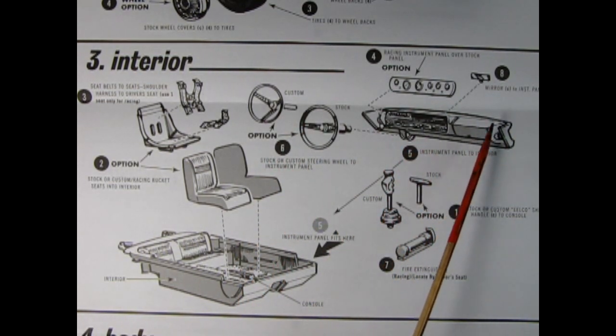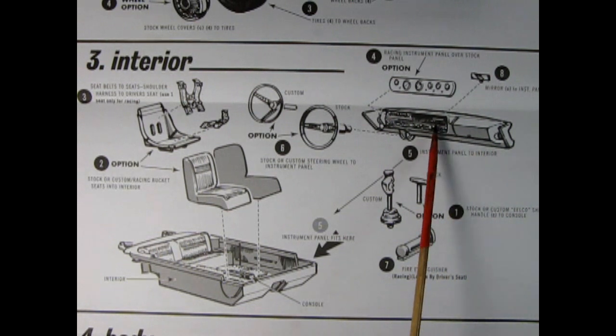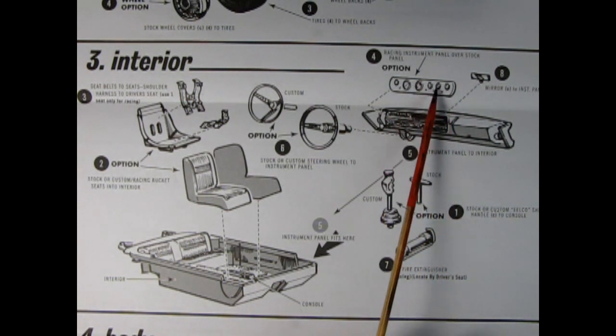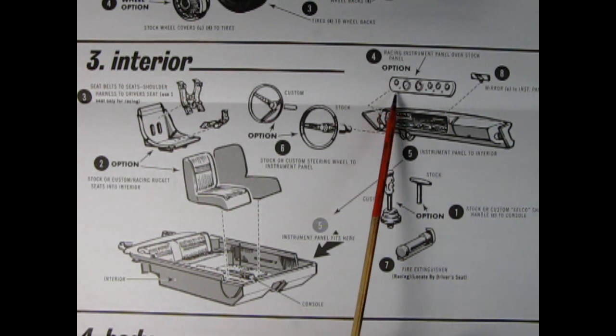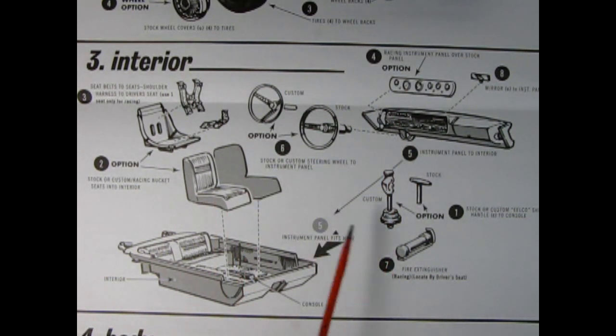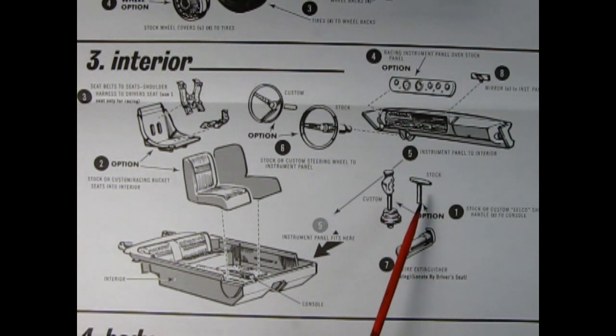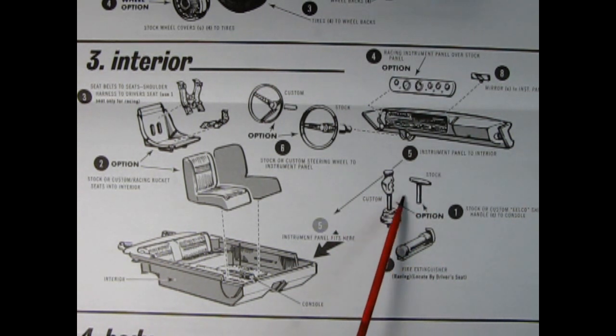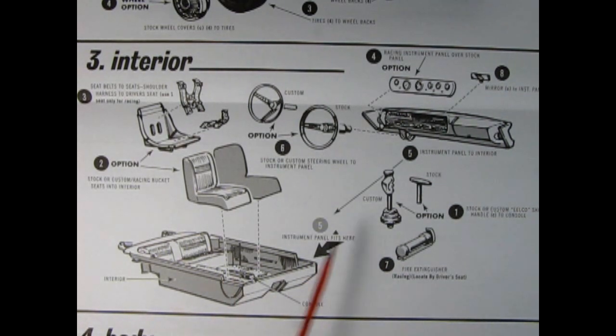You also have an option between the custom steering wheel or build it stock with the stock steering wheel. Here's the stock instrument panel with the rear view mirror being glued on place, as well as the option of using the racing panel, which you would glue right over top of the stock instrument panel. You also have an option of the stock T-handle, which you glue onto that console, or the custom gear shift lever, which would also glue onto the console, and the addition of the fire extinguisher for the racing version.